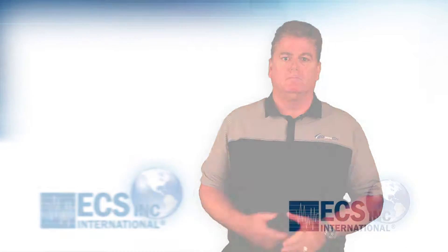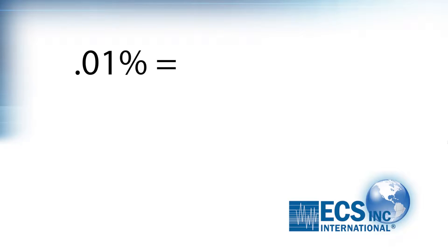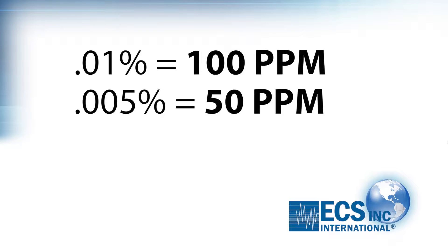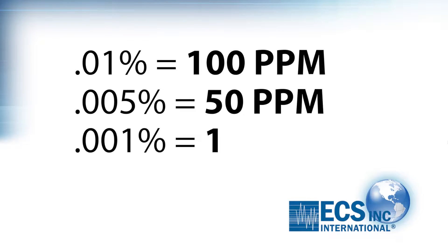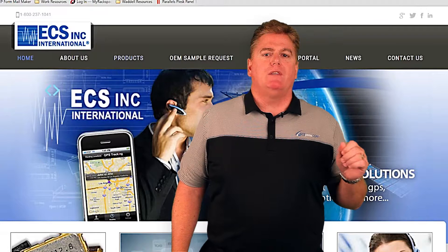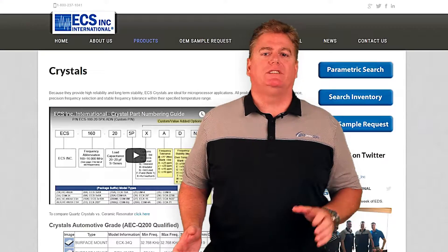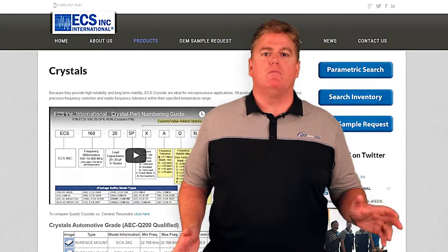The conversion is as follows: 0.01% is equal to 100 parts per million, 0.005% is equal to 50 parts per million, 0.001% is equal to 10 parts per million, etc. As frequency tolerances are tightened, costs increase incrementally.